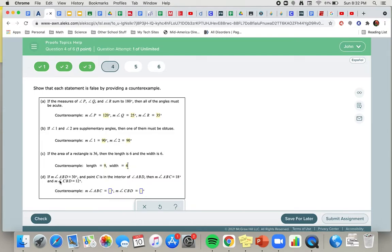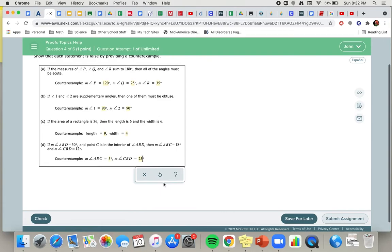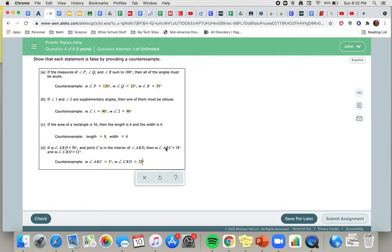Letter D: if the measure of angle ABD is 30 degrees and point C is in the interior of that, they're saying that if we split this up into two angles, then the measure of one of the angles is 18 degrees and the other one is 12 degrees. That's just one case. C could be on the interior and you could have one angle that's 1 degree and one angle that's 29 degrees, or an angle that's 5 degrees and another one that's 25 degrees. We're just looking for two numbers that add up to 30 that aren't 12 and 18. We've got infinite options actually.